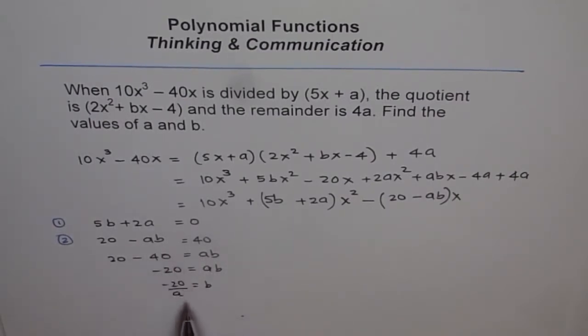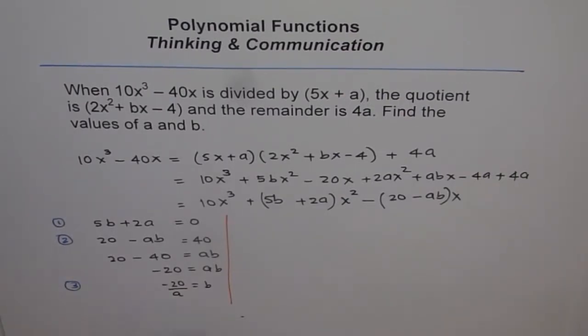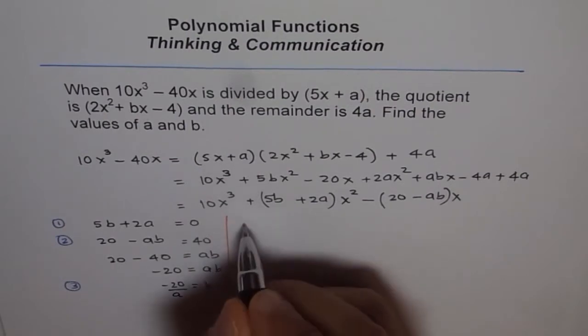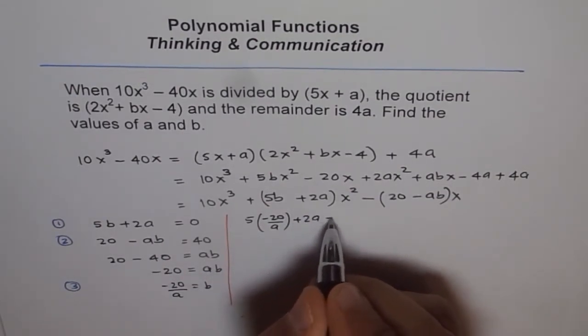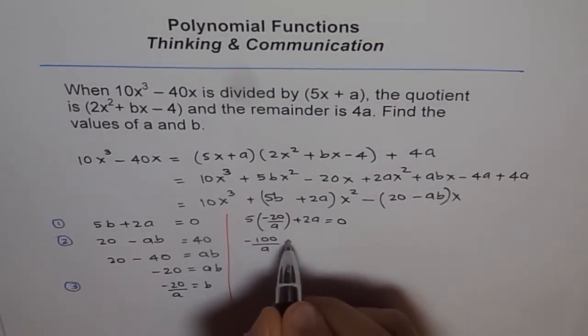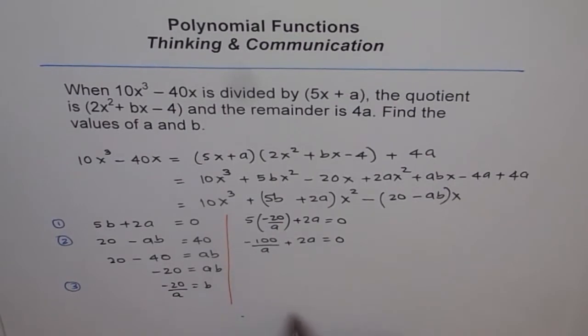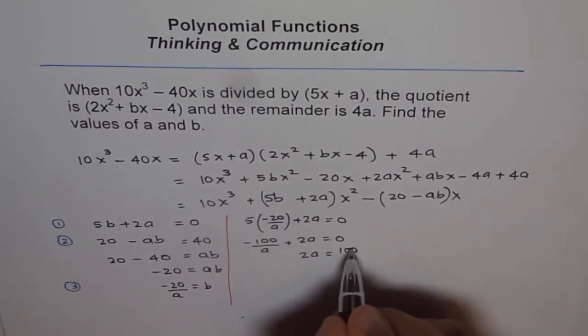So we can plug this value here and solve for a. Let's say this is my equation number 3. So I'm using equation 3 and 1 now. So I have 5 times minus 20 over a plus 2a equals to 0. That means minus 100 over a plus 2a equals to 0.